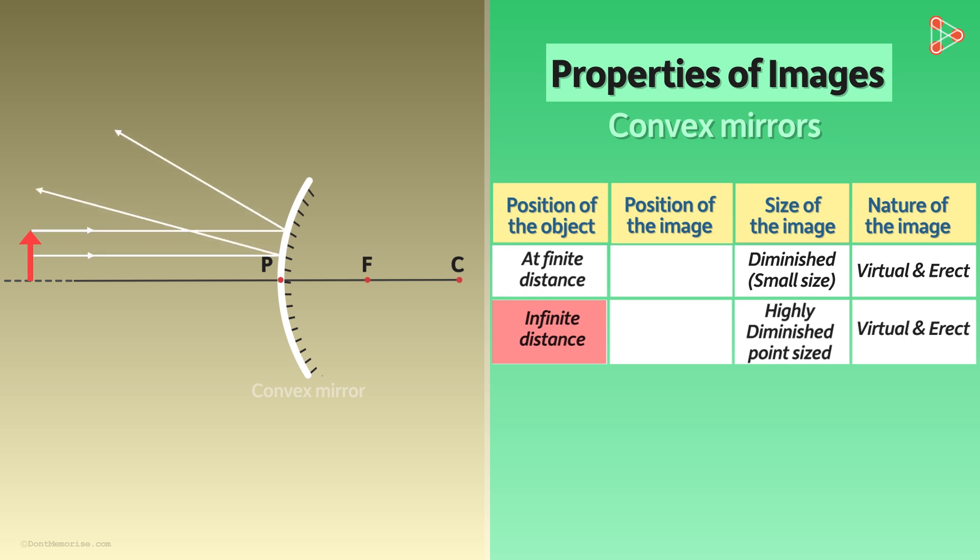These rays will be reflected in such a way that laws of reflection are obeyed. We notice that the rays are diverging after reflection. And when we extend these rays backwards, they meet at a single point which is the principal focus in this case. What does this imply? When we are looking at the image of an infinitely far away object, it appears to be formed at this single point behind the mirror.